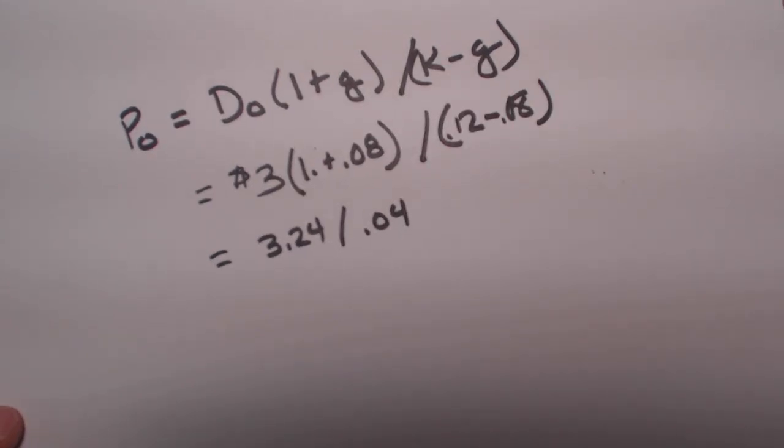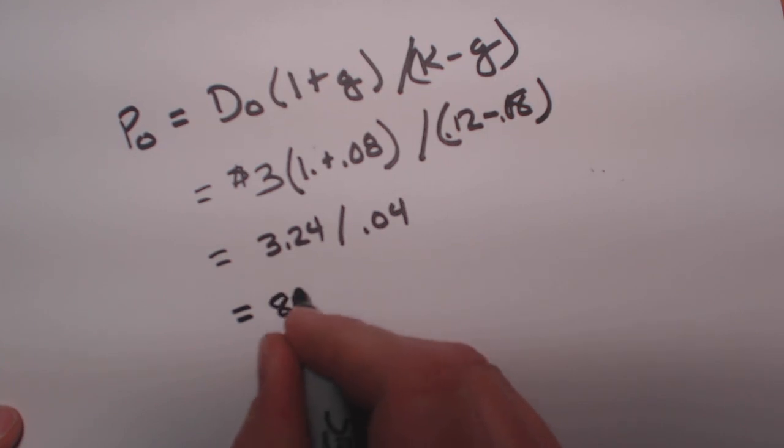So it's a very simple division where you take 3.24 and divide it by 0.04, and you come up with a price of $81.